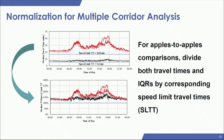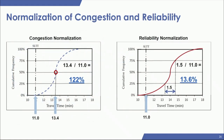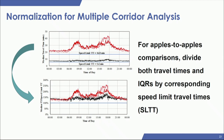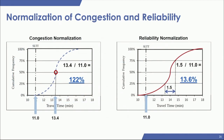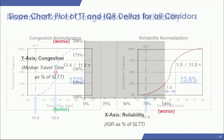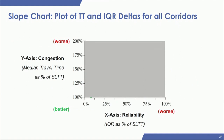To normalize for an apples-to-apples comparison, Purdue's approach is to divide the travel times and IQRs by the corresponding speed limit travel time, putting them both in percentage form. So your median travel time ends up on the same scale. The numbers are simple: the median percentile divided by your speed limit travel time, and the IQR divided by the speed limit travel time — resulting in values like 122% and 13.6%.